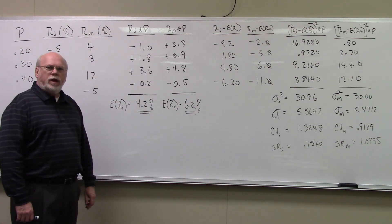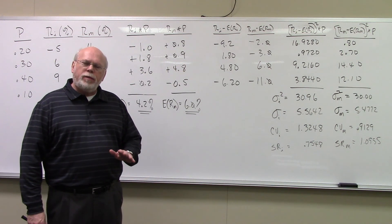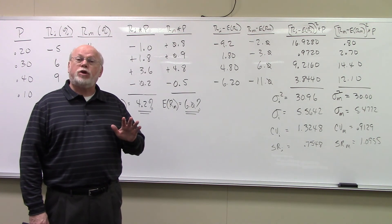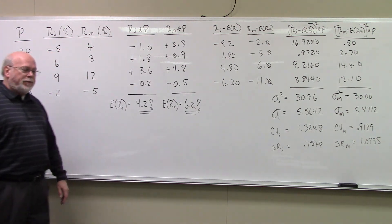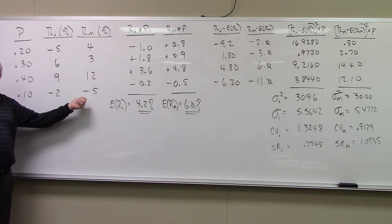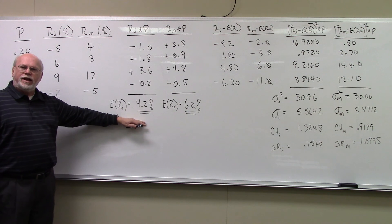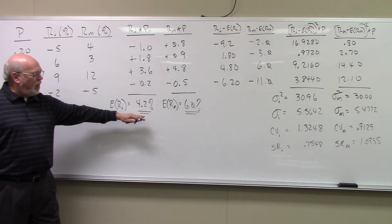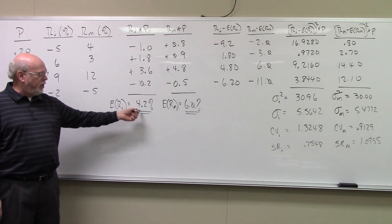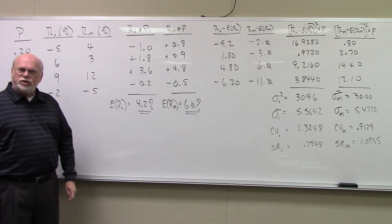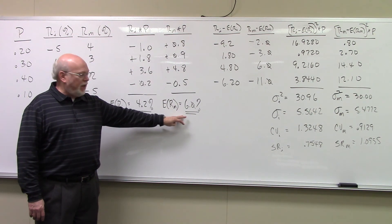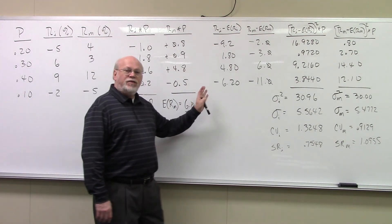We're calculating the statistics for a probability distribution. Remember, when you calculate a mean, you calculate an expected value — a weighted average mean. This gave us the probability distributions for security I and for the market. The first thing we did was calculate the weighted average mean for the security and for the market. The return we expect in the next time period for the security is 4.2%. The return we expect for the market is 6%. We then calculated the deviations from the mean.